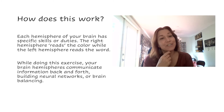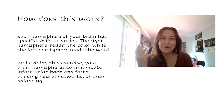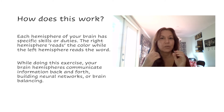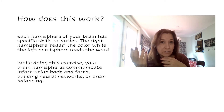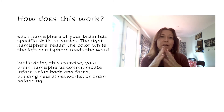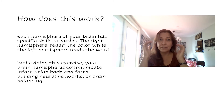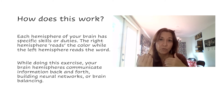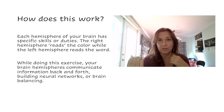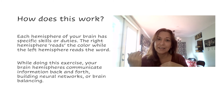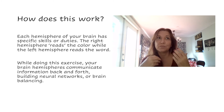So how does this work exactly? What am I doing? Each hemisphere of your brain has very specific skills or duties. The right hemisphere is reading the color while the left hemisphere is reading the word. Now while you're doing this exercise, the brain hemispheres have to communicate with each other back and forth. And this builds new neural networks — neurogenesis — because of our brain plasticity. And that really causes brain balancing.